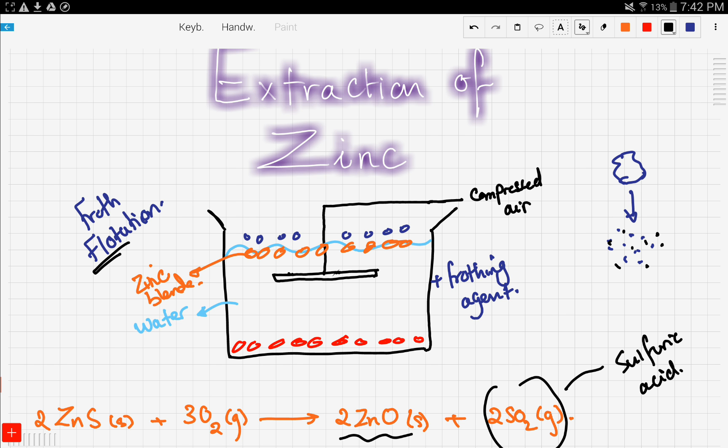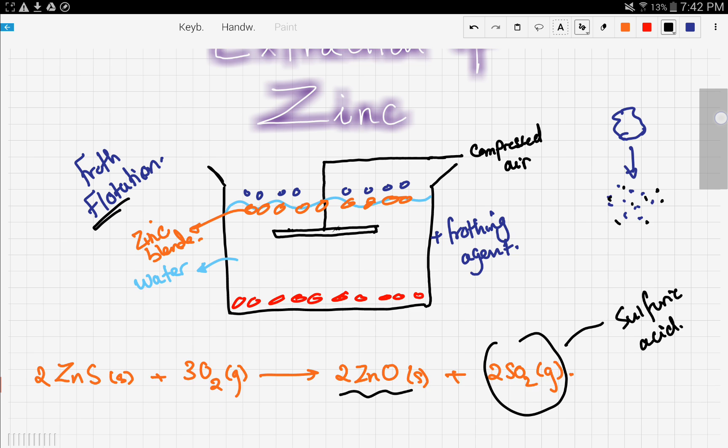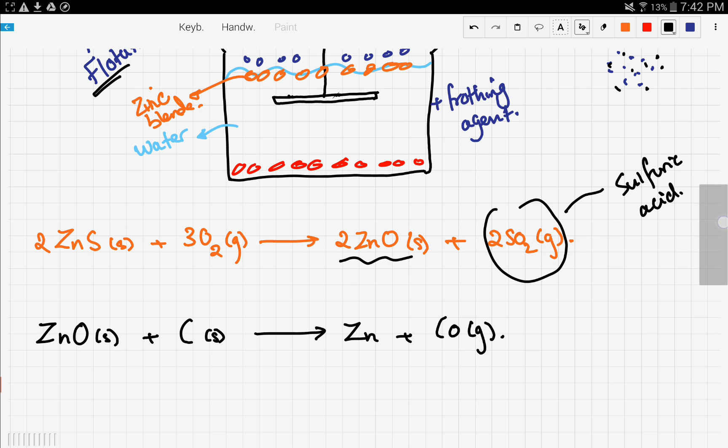And what happens is the zinc blend will float onto the top. Now, we take this zinc blend and we heat it up in a furnace at very high temperatures and we get zinc oxide and sulfur dioxide gas. The sulfur dioxide gas is used to make sulfuric acid and other things.